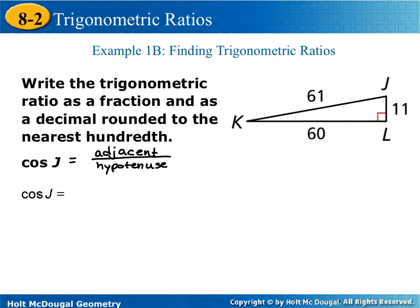Write the trigonometric ratio as a fraction and as a decimal rounded to the nearest hundredth. Now we have the cosine of J. Cosine is adjacent over hypotenuse. What is adjacent to angle J? 11. And what's the hypotenuse? 61. So we would do 11 over 61, which is equal to 0.18.